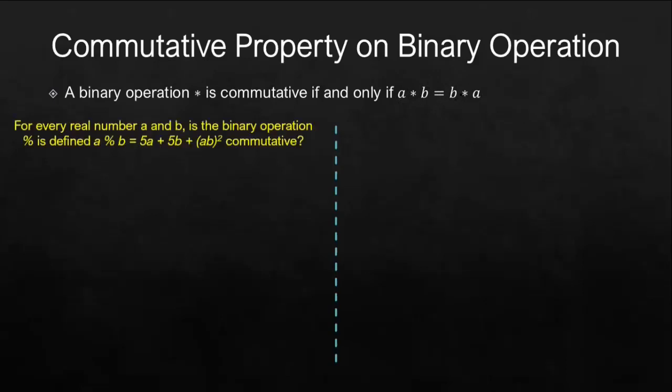Let's use this first example. Suppose we will take two members of real numbers, say for example a and b, and we will operate them using this binary operation percent, defined by a percent b equals 5a plus 5b plus quantity ab squared. We have to prove that this is commutative.